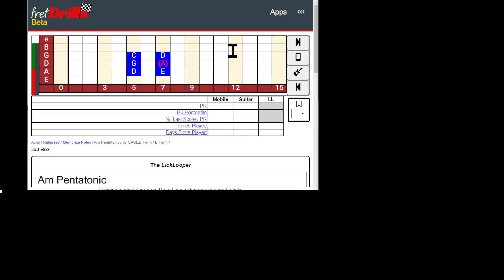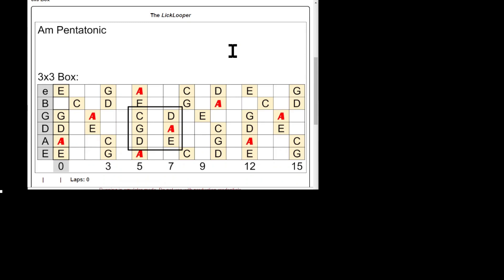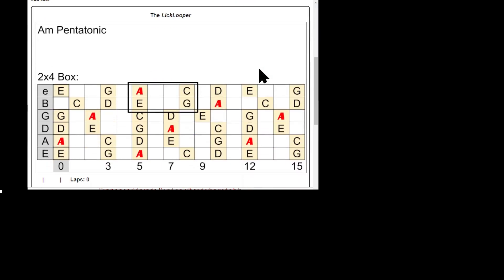The first lesson page in this section is the 3x3 box of the E form of the A minor pentatonic. The lick looper will feature prominently to get you kick-started. Next is the 2x4 box, again having the lick looper.